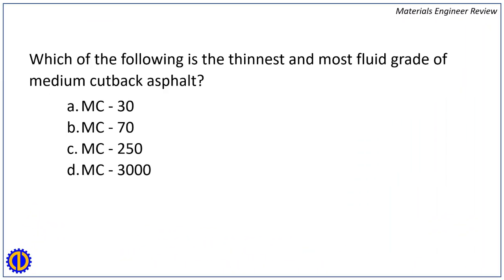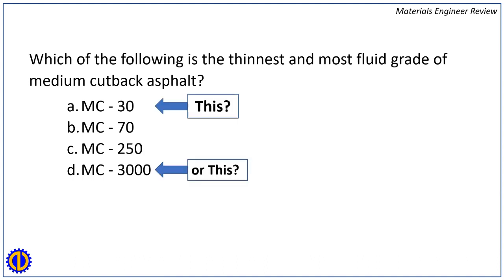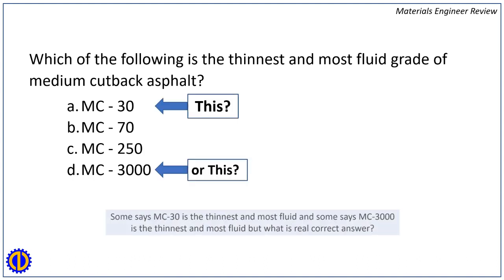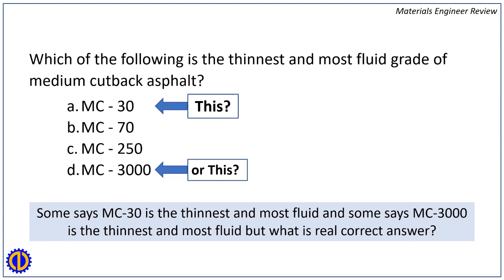Which of the following is the thinnest and most fluid grade of medium cutback asphalt? A) MC30, B) MC70, C) MC250, D) MC3000. There is some confusion — some say MC30 is the thinnest and most fluid, and some say MC3000 is the thinnest and most fluid. What is the real correct answer?